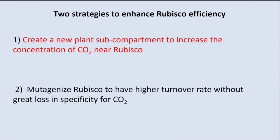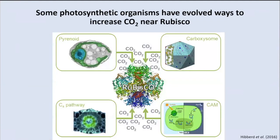The first part is an effort to create a new plant subcompartment to increase the concentration of CO2 near Rubisco. Some photosynthetic organisms have evolved ways to deal with this problem: there's the C4 pathway, the CAM pathway, the pyrenoid, and the carboxysome — all of these put more CO2 in the vicinity of Rubisco to assist with photorespiration and also increase efficiency.